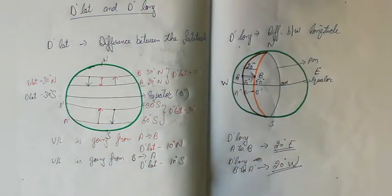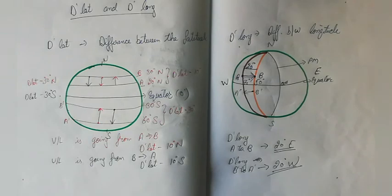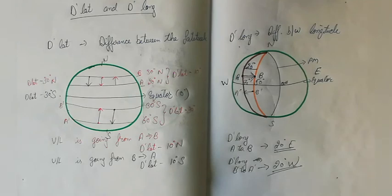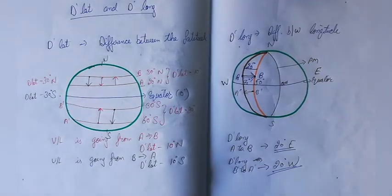If we cross the 180 degree meridian, the scenarios are different, and we will discuss what name to give DLONG in that case in another video. In the next video, we will be looking at compass points and some other nautical terms. See you in the next video.